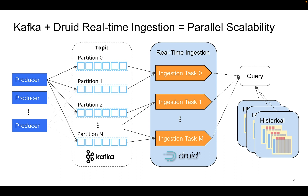If you need more throughput and you're increasing the number of partitions in Kafka, you can do the same in Druid and increase the number of tasks. Typically, though, the number of tasks aren't necessarily equal to the number of partitions — they can be less, and subsets of the partitions will be assigned to each task for consumption.